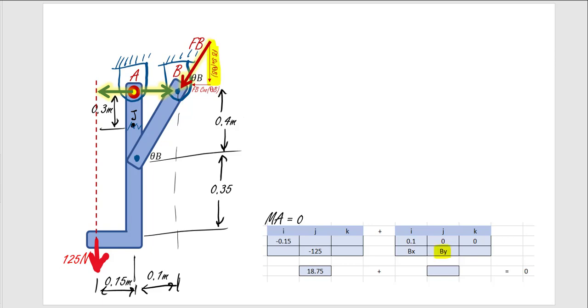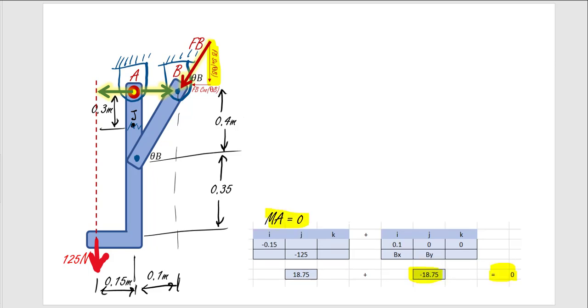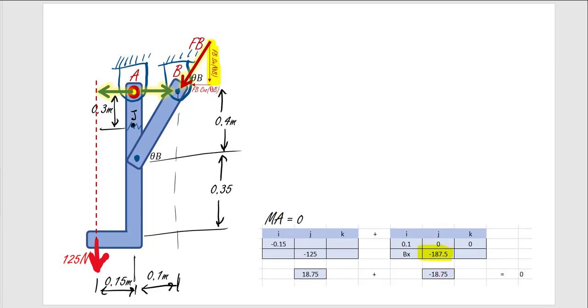And in order to find BY, we know that the moment has to add to zero. So that means that what's happening on the left-hand side here is going to have to balance what B is contributing to the moment. So we have a magnitude of that moment. Moment is equal to R cross F, or BY is equal to moment divided by that distance. So 18 divided by 0.1. Just move that decimal place over, and now we have the Y component of B.